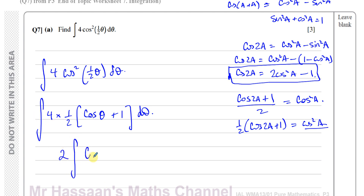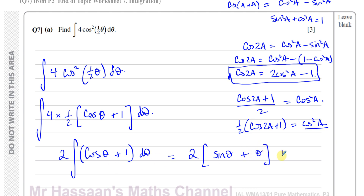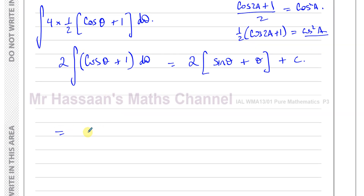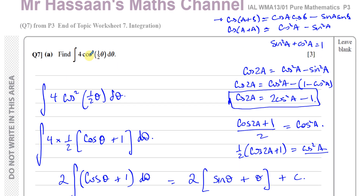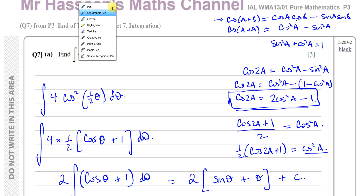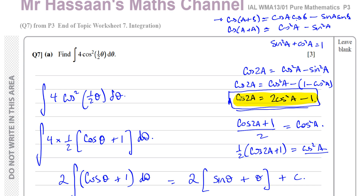Now we have something we can integrate. Four times a half is two, so we integrate 2(cosθ + 1) with respect to theta. The integral of cosθ is sinθ, and the integral of 1 is θ, giving us 2sinθ + 2θ + c. That's the answer to part a — simply applying the identity cos²a = ½(cos(2a) + 1) to this situation.